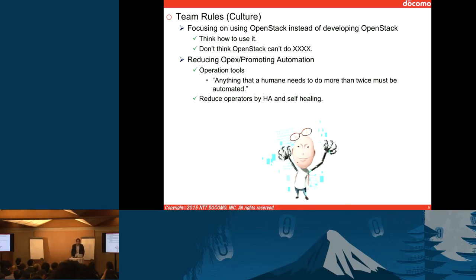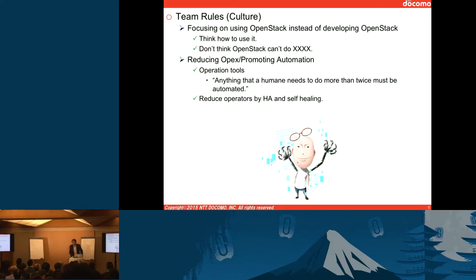Human resources is the most important asset for us and highly limited. That's why we are always thinking of reducing OPEX and promoting automation. Anything that a human needs to do more than twice must be automated — this is one of the key principles of our team. We are also actively supporting HA and introducing self-healing.